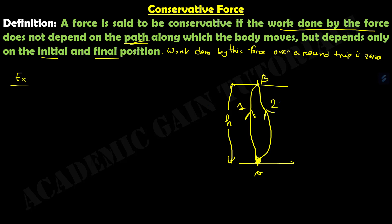The gravitational force on this object is Mg. When I raise the object, the gravitational force Mg acts vertically downward at any point along any path. The displacement of the object along the line of action of the gravitational force is H — it does not depend on which path we use.